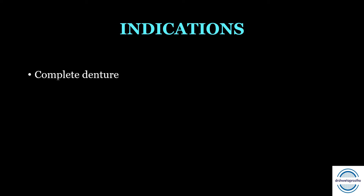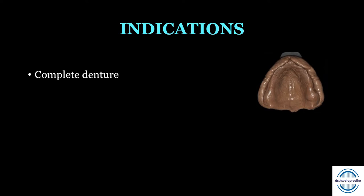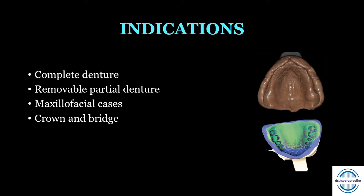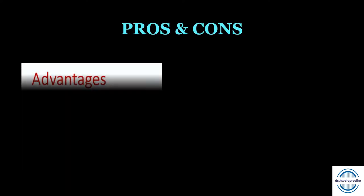When introduced, polysulfides were used everywhere — complete dentures, removable partial dentures, maxillofacial cases, and crown and bridge — because they had superior properties compared to agar and alginate. However, because of their disadvantages and the advent of silicones, polysulfides lost their popularity.